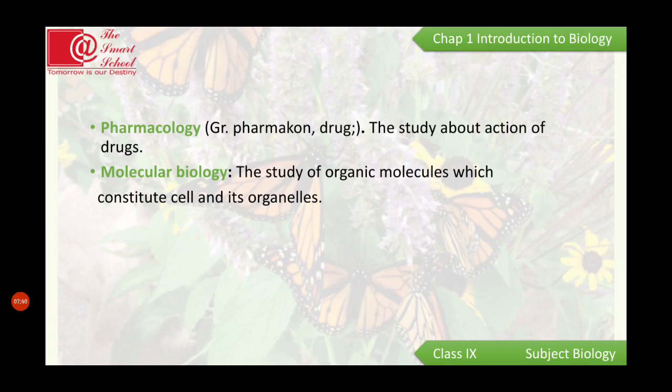These are the branches of biology which came about through advanced research. Previously there were 13 branches, but in the new book there are two additions, making 15 branches in total. I hope all branches are clear to all of you.